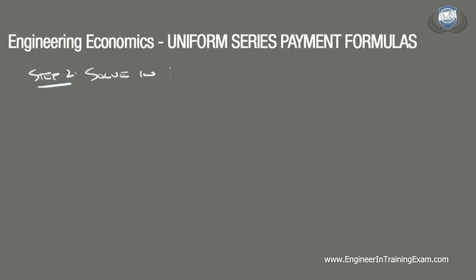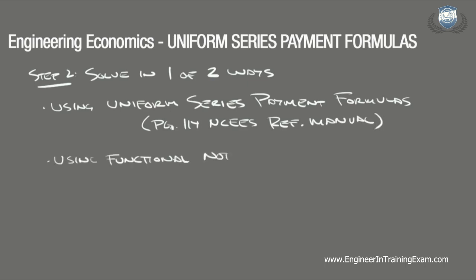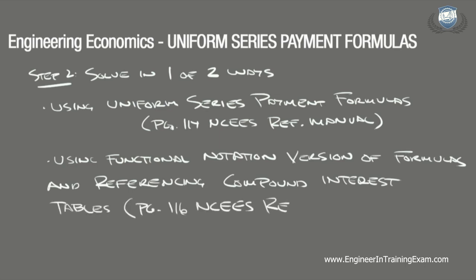Once these variables are defined, we can solve these problems in one of two ways: either by using the uniform series compound amount formula found in the table on page 114 of the NCEES Supplied Reference Handbook, 8th Edition, 2nd Revision, or by using the functional notation version of the equation and referencing the compound interest table starting on page 116 of the NCEES Supplied Reference Handbook.